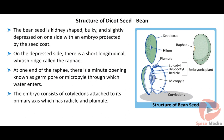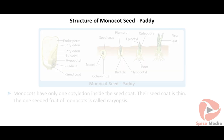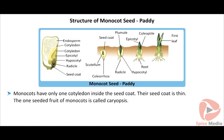The embryo consists of cotyledons attached to its primary axis, which has a root portion called the radicle and a stem portion known as the plumule. The tip of the radicle projects outside and is closer to the micropyle. The plumule is placed between the two cotyledons and consists of a shoot axis with a small bud that gives rise to two tiny folded leaves. Monocots like paddy have only one cotyledon inside the seed coat.